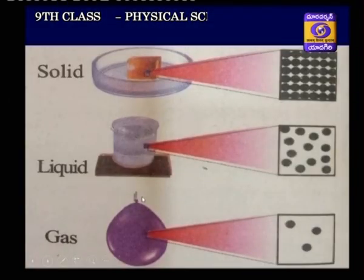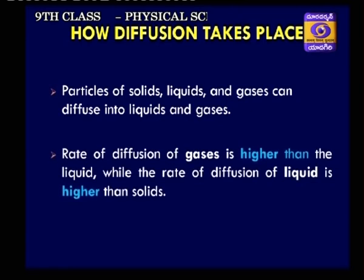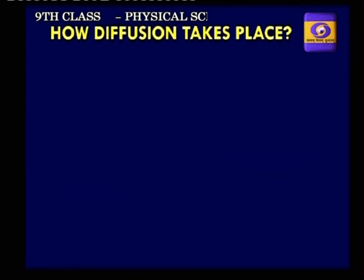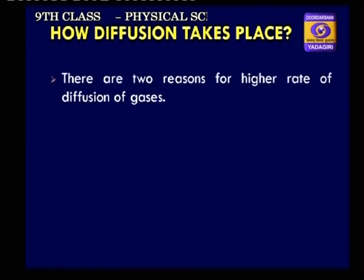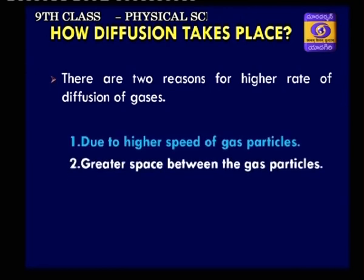In solids, the arrangement of particles has less space. In liquids, the particles have more space. In gases, the particles have huge space. Particles of solids, liquids and gases can diffuse into liquids and gases. The rate of diffusion of liquid is higher than solids. There are two reasons for the high rate of diffusion of gases: due to higher speed of gas particles, and due to greater space between gas particles.